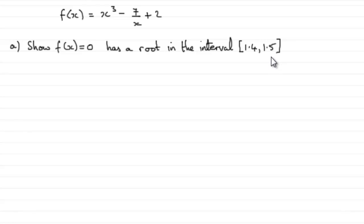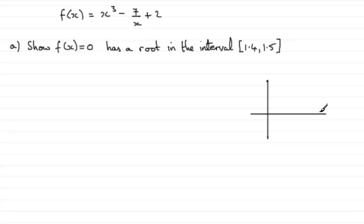So to do this, what we need to do is look for a change in sign as we move across this interval. That would indicate that the graph — if we were to draw the graph of f of x, with the x-axis and y-axis — if y equals f of x, the graph would cross somewhere between 1.4 and 1.5. There'd be a change in sign, whether it goes from positive to negative or negative to positive.